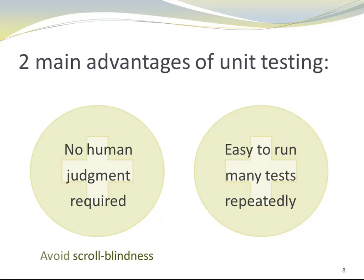Another main advantage is that it is easy to run many tests repeatedly. This allows us to catch regression. As changes are made to software, it happens that errors are accidentally introduced in code areas that were already tested and used to work correctly. That's a regression. Making it easy to run many tests over and over again through automated testing allows us to catch regressions early on.